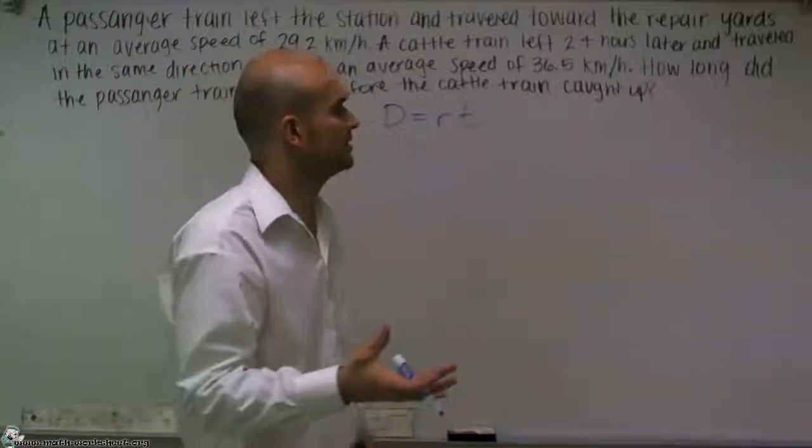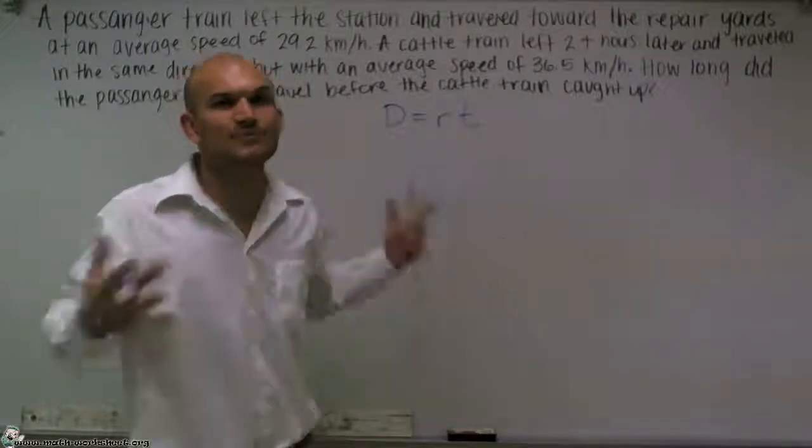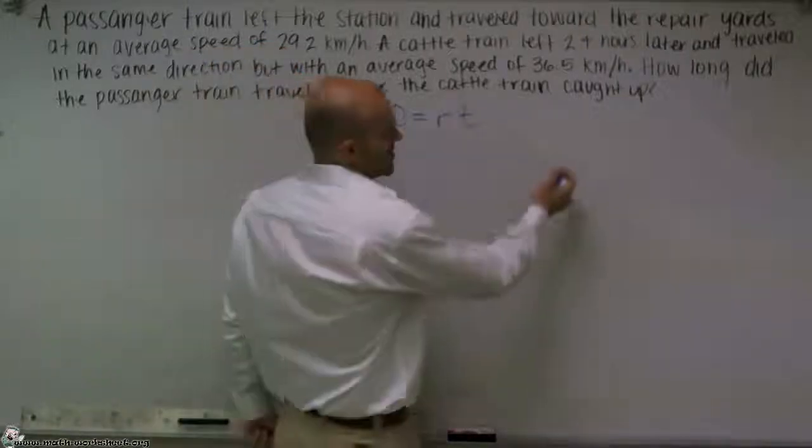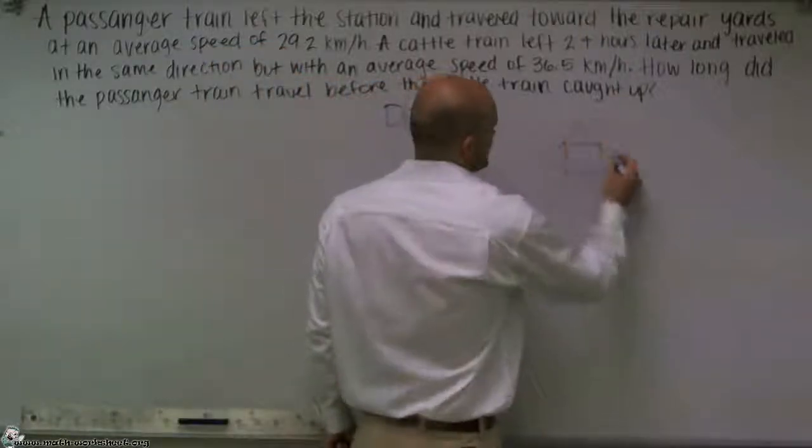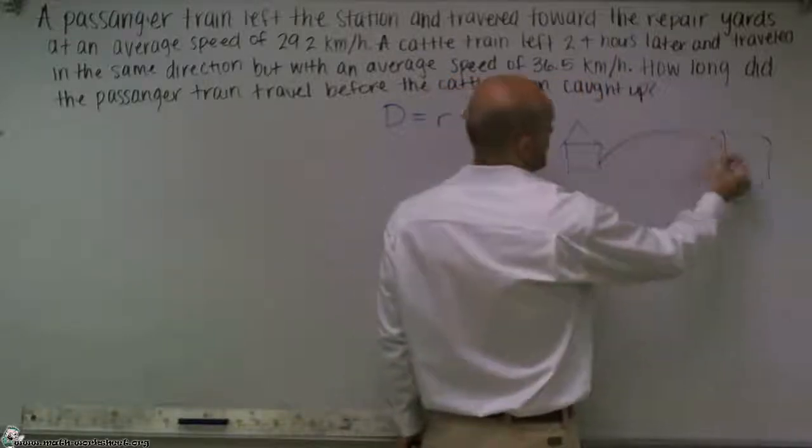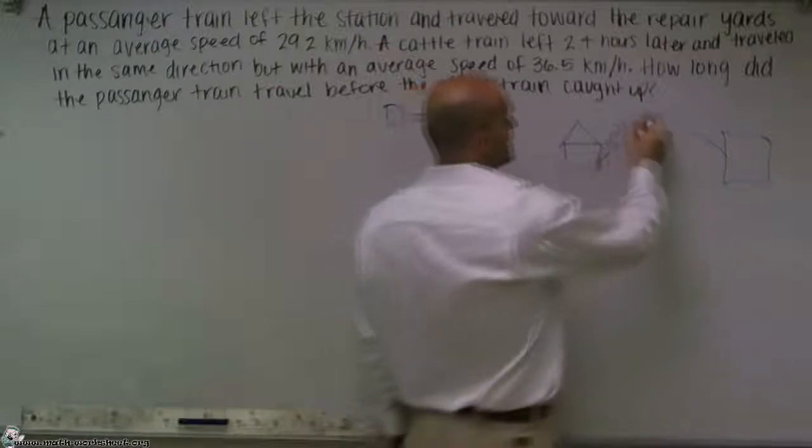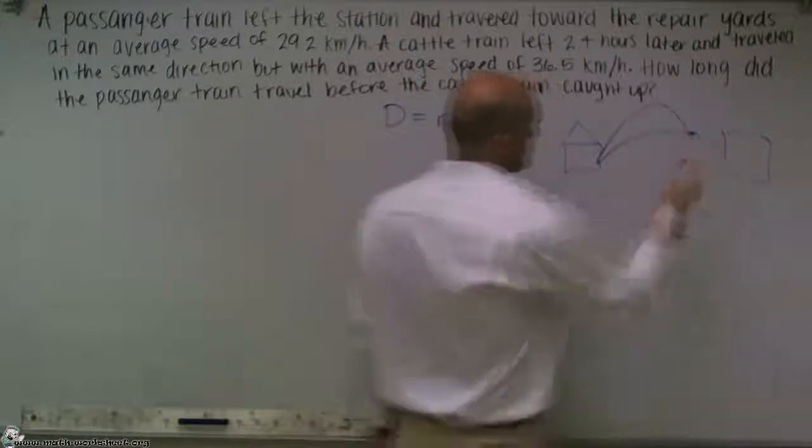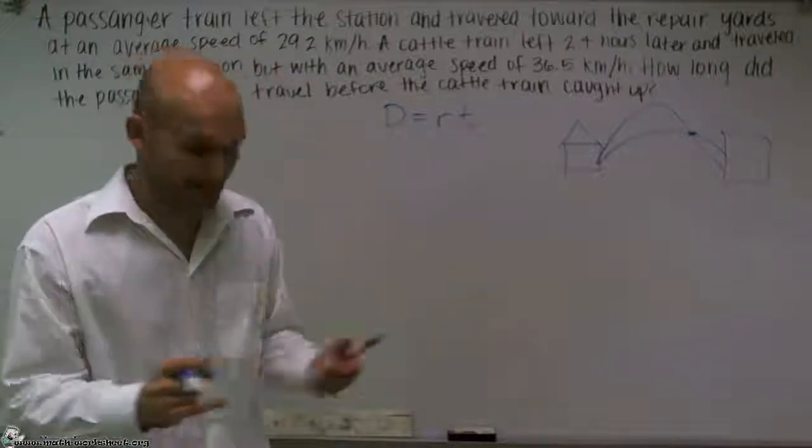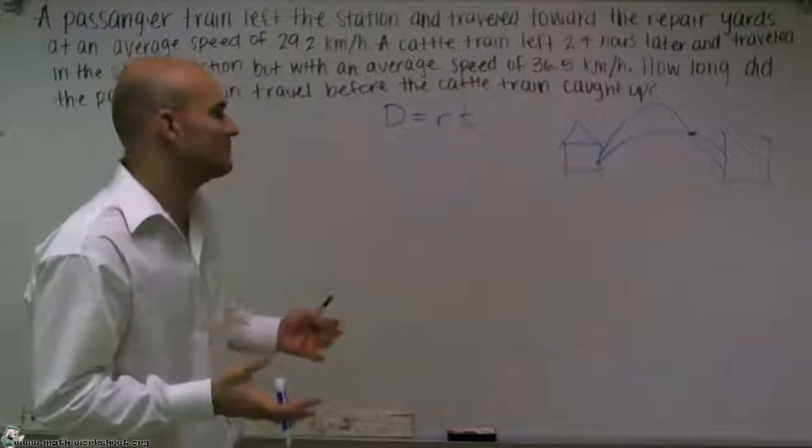The next thing that you're going to want to know is with this problem, you're really going to have to draw something up. Make a picture of it. So it doesn't need to be crazy. Here's your train station. Here's the yard. We know that one train goes like this and then the other one leaves 2.4 hours later and they meet somewhere before the train station. So now we have a diagram that we can look at and see how we're going to figure this out.